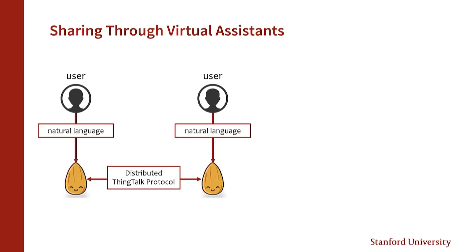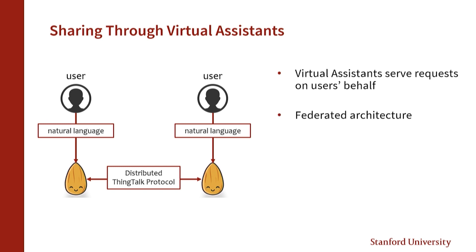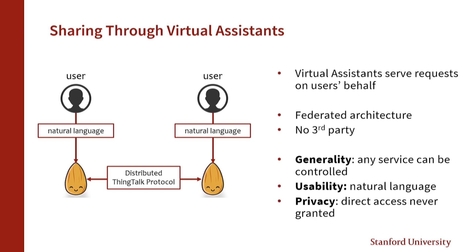In particular, we observe that the virtual assistant serves requests on the user's behalf. And so if they can serve a question on my behalf, they can serve a question on behalf of someone who might want to access my data. We have designed a federated architecture that allows virtual assistants to communicate without any third parties seeing the data. Choosing a virtual assistant provides generality, because all capabilities available to a user are available to be shared. It provides usability because it natively supports natural language. And it provides privacy because we're never actually granting direct access — the virtual assistant is always mediating, always a trusted agent that guarantees only the allowed access is provided.